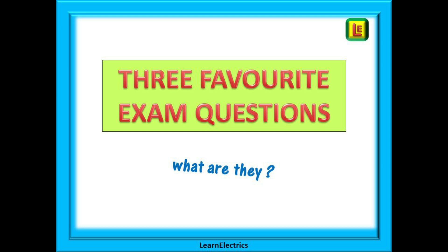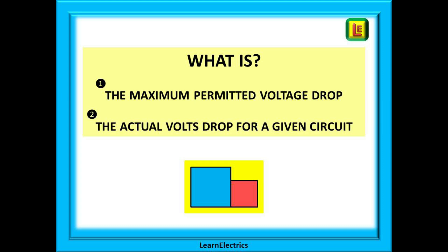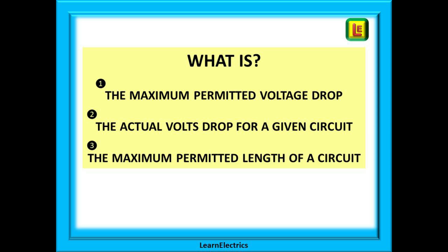You will need a calculator but nothing more difficult than multiply and divide. The three question types are: number one, what is the maximum permitted voltage drop; number two, what is the actual volts drop for a given circuit; and number three, what is the maximum length of cable that can be installed to not exceed the maximum permitted voltage drop. And that's it.